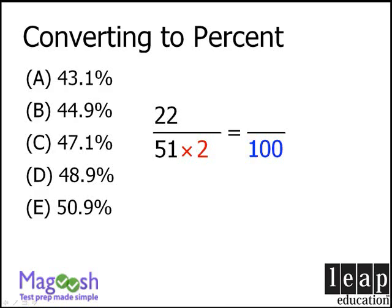We'll use this notation. This means we must multiply 22 by a number slightly less than 2 as well. When we do this, we get a number slightly less than 44, and this equals a number slightly less than 44%. Looking at our answer choices, our answer must be A.